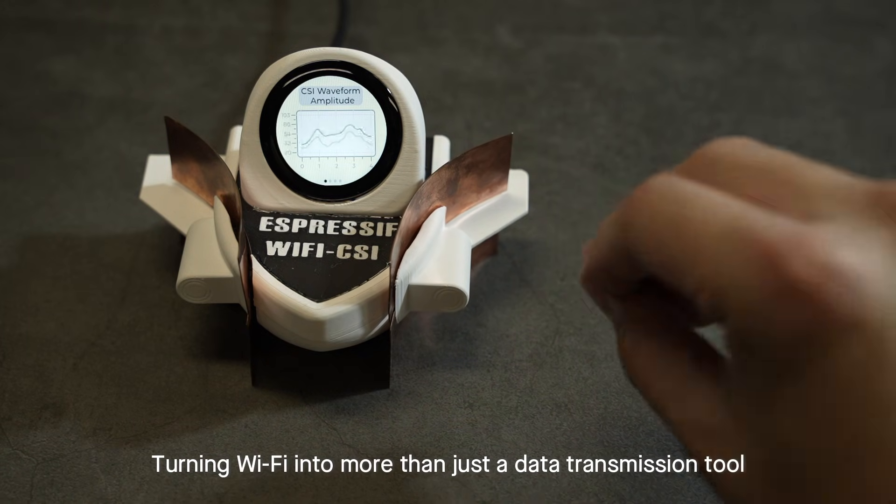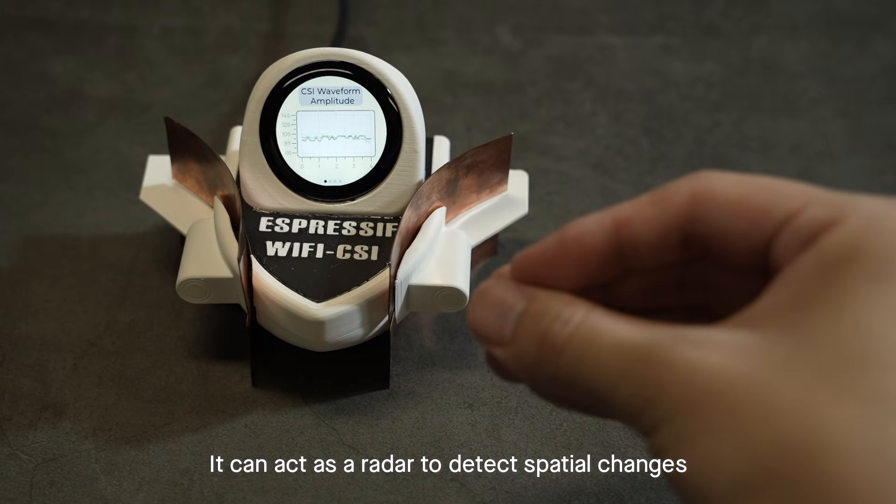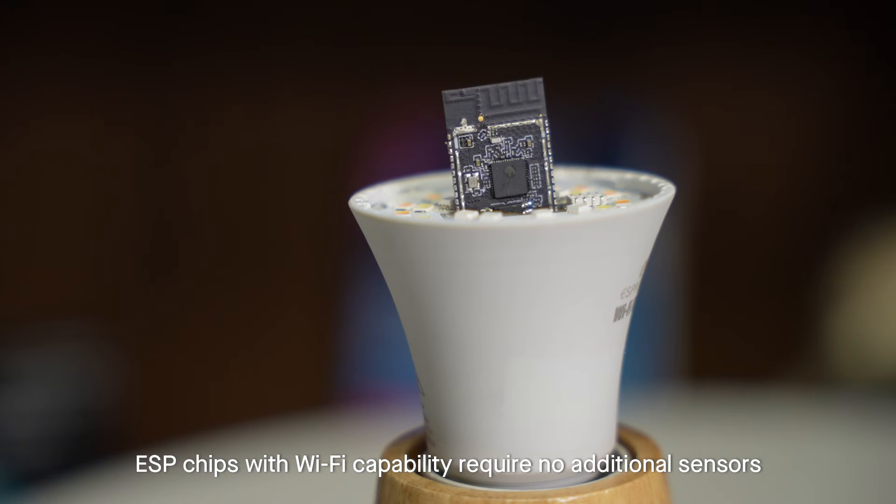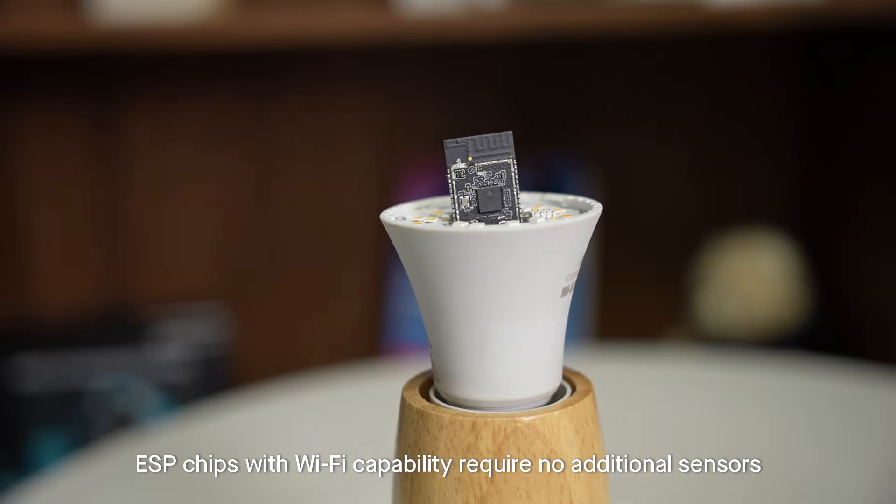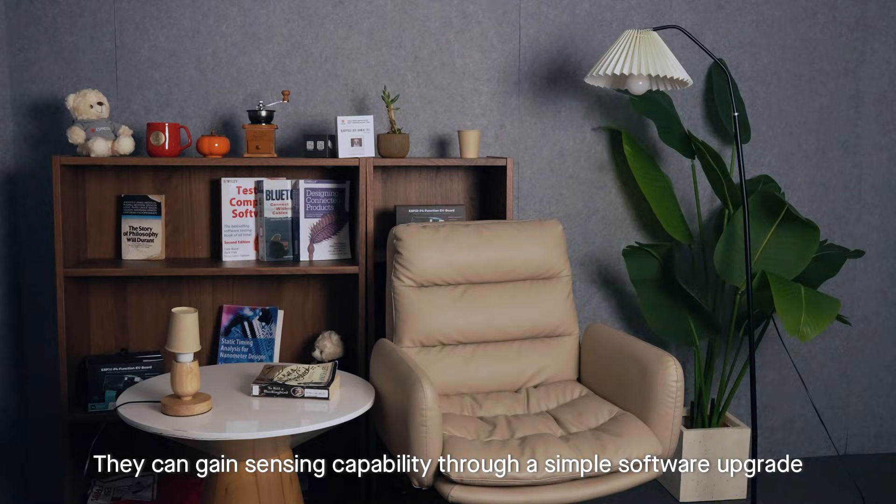Turning Wi-Fi into more than just a data transmission tool, it can act as a radar to detect spatial changes. ESP chips with Wi-Fi capability require no additional sensors—they can gain sensing capability through a simple software upgrade.